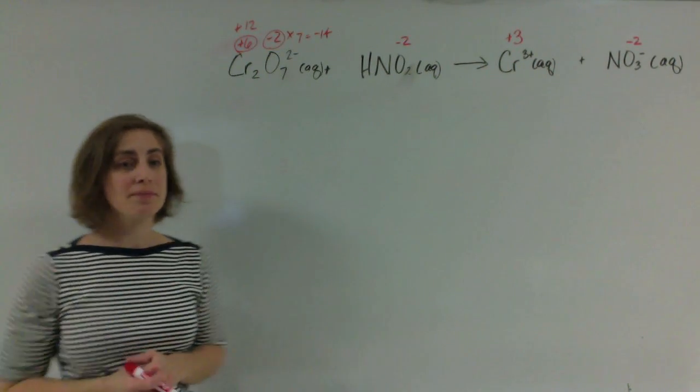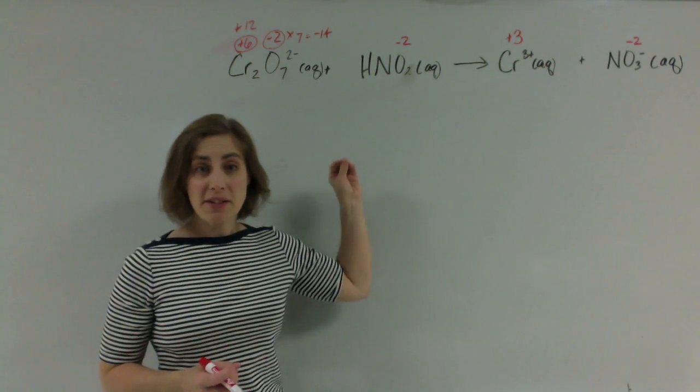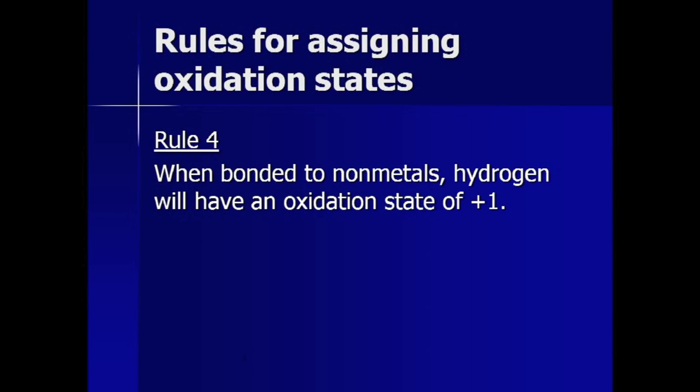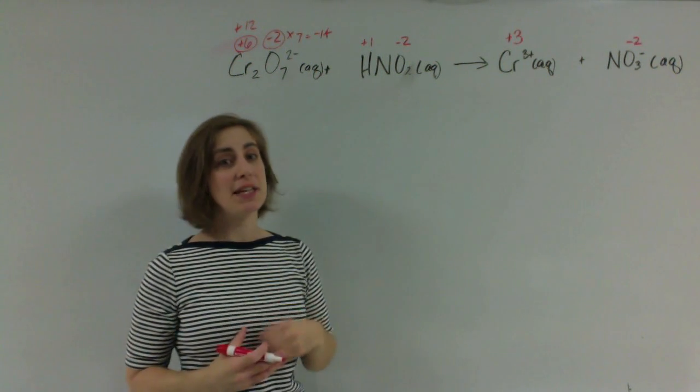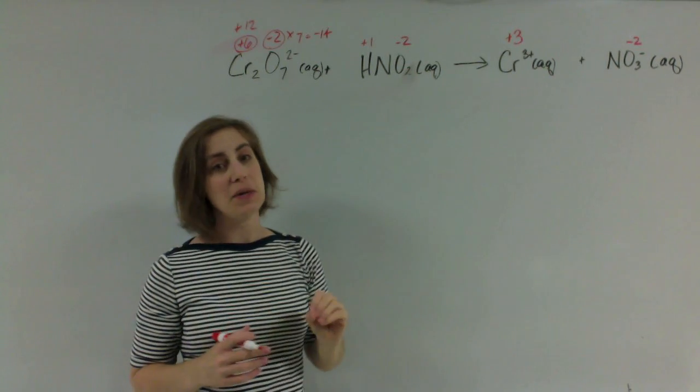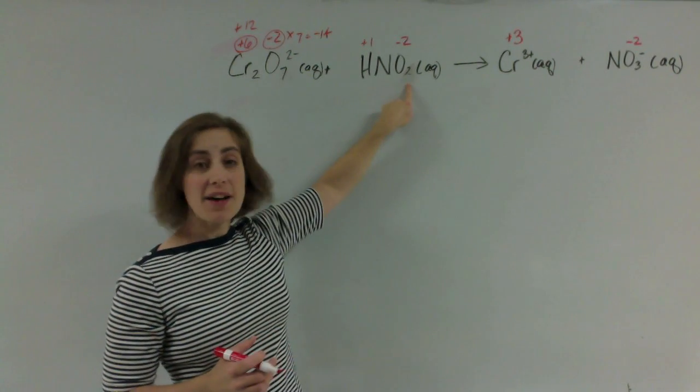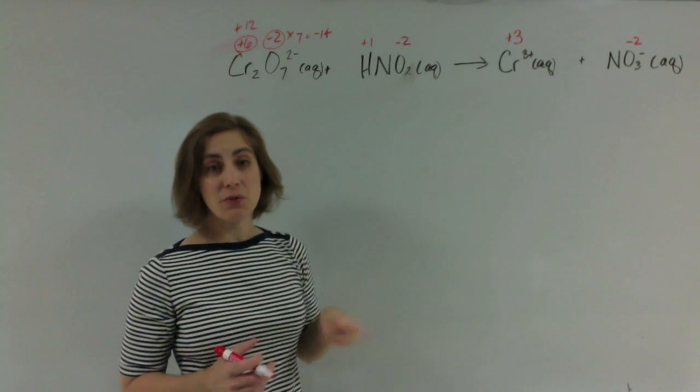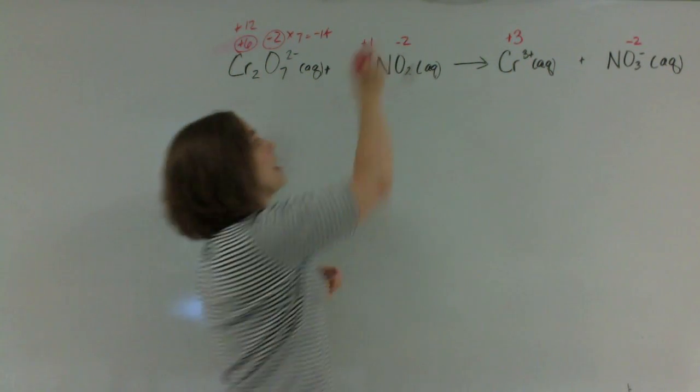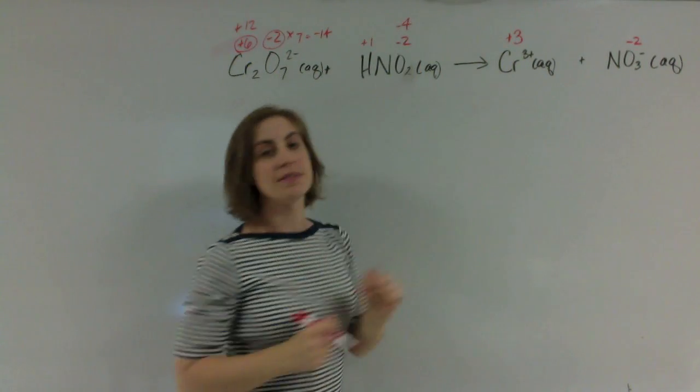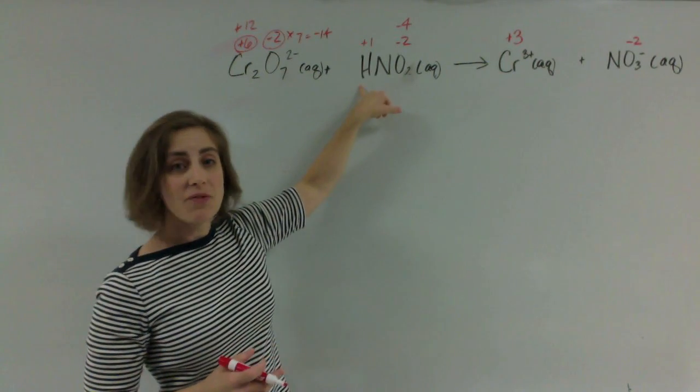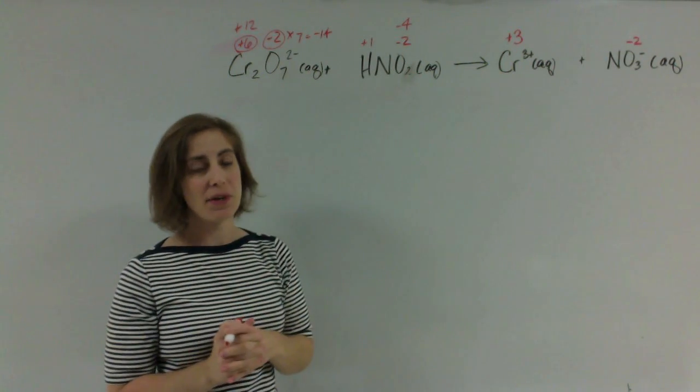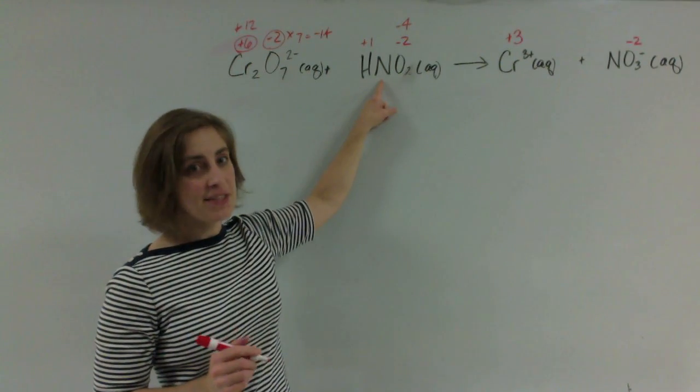Let's move on to nitrous acid. All of these are nonmetals, which means that the hydrogen will have a positive 1. This is a neutral compound, which means that overall there's no charge. So as you add up everything, it's got to equal 0. We have 2 oxygens, each with a negative 2 charge, which means overall it contributes a negative 4. So positive 1 and negative 4 overall make a negative 3. That means nitrogen is going to be a positive 3.